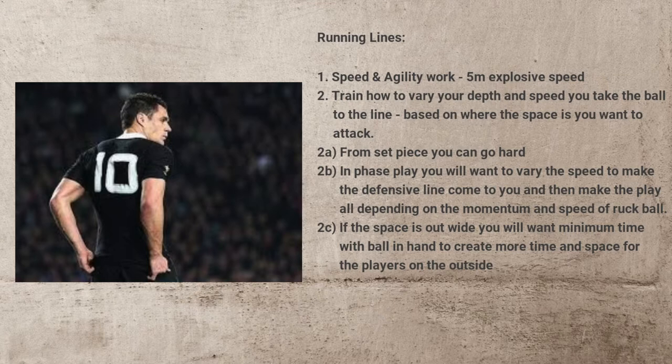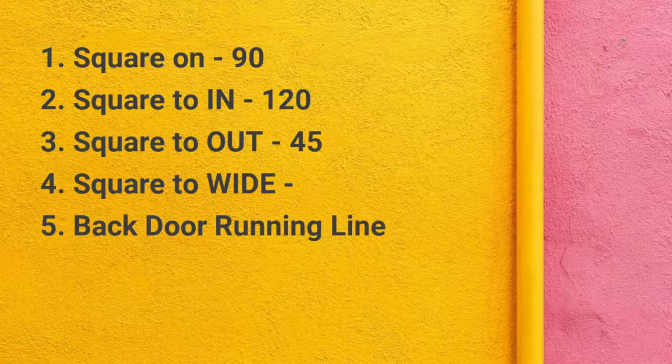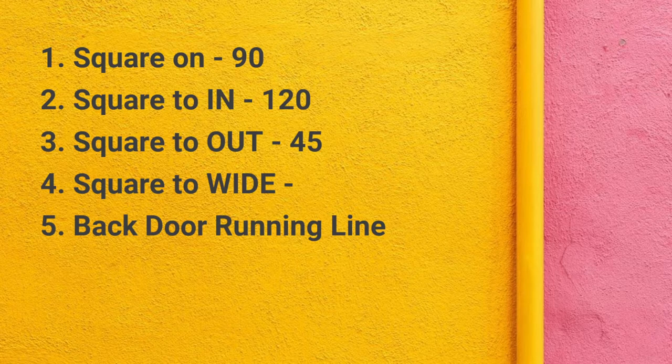We'll be looking into a few basic running lines — not all of them, but we'll touch on these five: square on, square to in, square to out, square to wide, and then a backdoor running line option.